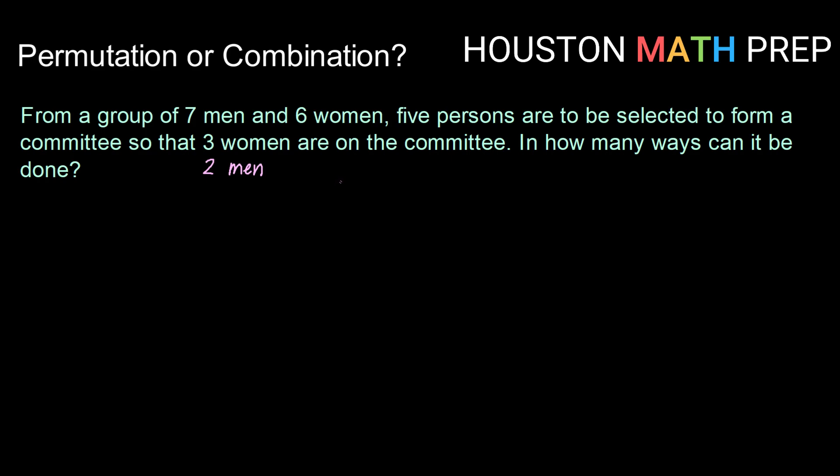So how to determine if we're working with a permutation or a combination is to think about does the order of the people matter? So let's say we have Susan, Julie, and Mary as our three that are chosen. Does it matter here if it's Susan, then Julie, then Mary, or Julie, then Susan, then Mary, or Mary, then Susan, then Julie? In this case, no, it doesn't matter. If it is those three women that are chosen from the group of six women, that's all the same, no matter what order they're chosen. So when that is the case, we are working with a combination.